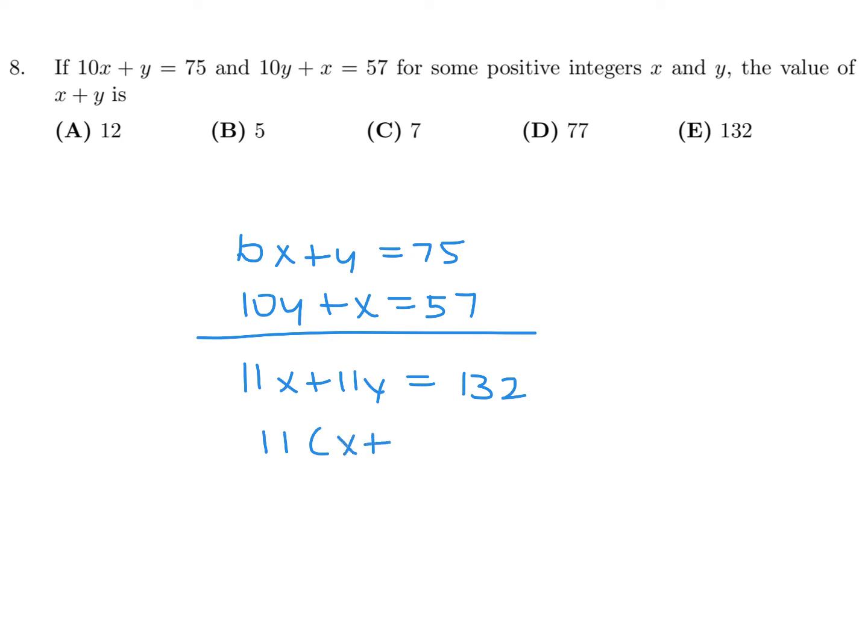Factor out the 11. We get x plus y. And then divide both sides by 11. And we'll get 132 over 11. And 132 over 11, I believe, is 12. Yeah. So x plus y, which is what they asked, is 12. And therefore, number 8, the answer is C.